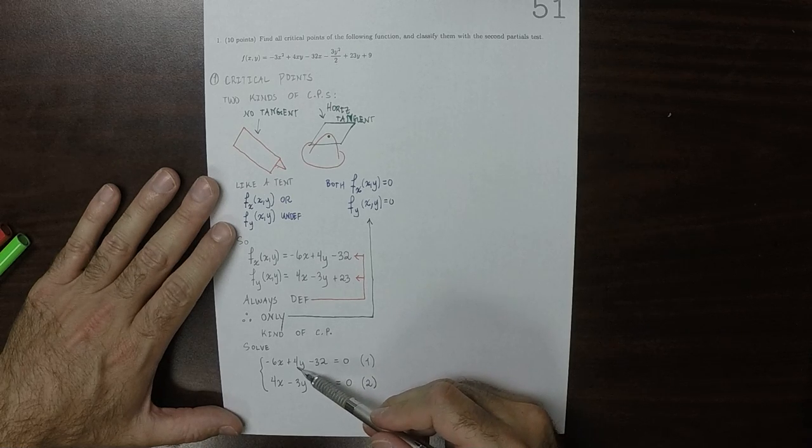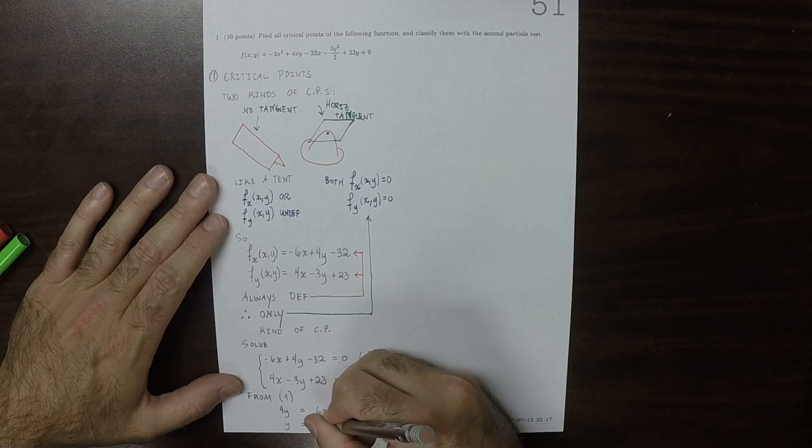So of the two possibilities to deal with first, I think equation 1 is slightly easier because I could solve for y and divide by 4. I'd still get a fraction, but at least 32 is divisible by 4. Whereas because of this number 23, 23 is a prime, it's going to definitely be a fraction. So from 1, we see that 4y is equal to 6x plus 32. And then I can divide everything by 4 to obtain that y is 3 halves x plus 8.